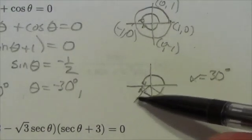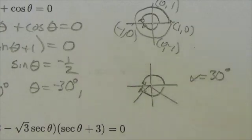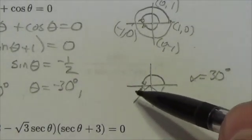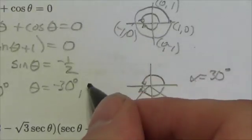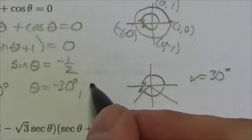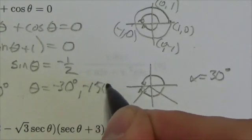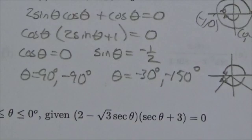Keep going, because this negative rotation also passes through this terminal arm. This is the 30 degrees, so this has got to be negative 180 plus 30, because I'm rotating that way. And this would be negative 150 degrees. So my solutions here would be 90 and negative 90, negative 30, negative 150.